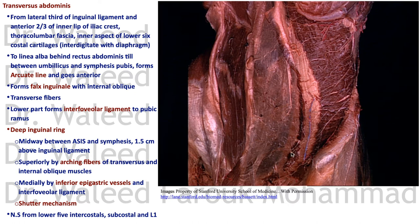In the lower part of the abdominal wall — midway between the umbilicus and symphysis and below — all three muscle layers redirect to the front of the rectus abdominis, creating a defect on the back called the arcuate line. The lower one-quarter of the rectus abdominis posteriorly is bare of aponeurosis and is directly covered by the transversalis fascia only.